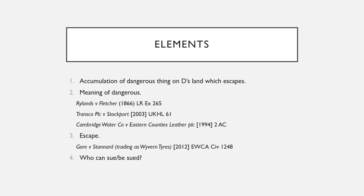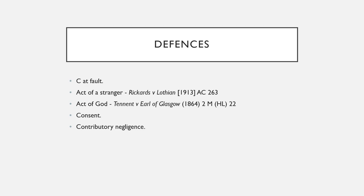Who can be sued? Under Rylands, it is the occupier of the land who is sued. Who can sue? It's a claimant with a right to the land who suffered the damage. Looking at defences: if the claimant was at fault, there's no liability. If it was the act of a stranger — in Lothian, an unknown person blocked a basin and caused flooding which damaged the property. There's also act of God — in Glas­gow Corporation, this was defined as something completely unforeseeable by any man. There's also consent and contributory negligence.